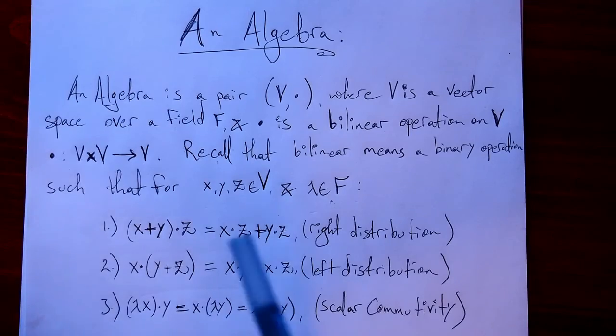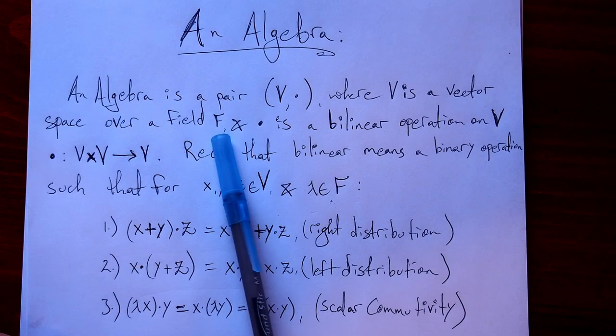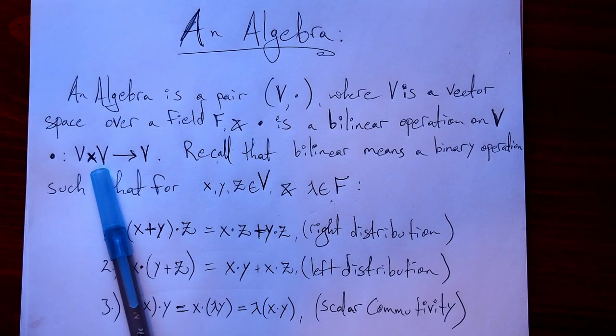What the heck is an algebra? An algebra is a pair (V, ·), where V is a vector space over some field F, and · is a bilinear operation on V. Dot takes two guys from V and spits out a guy from V.